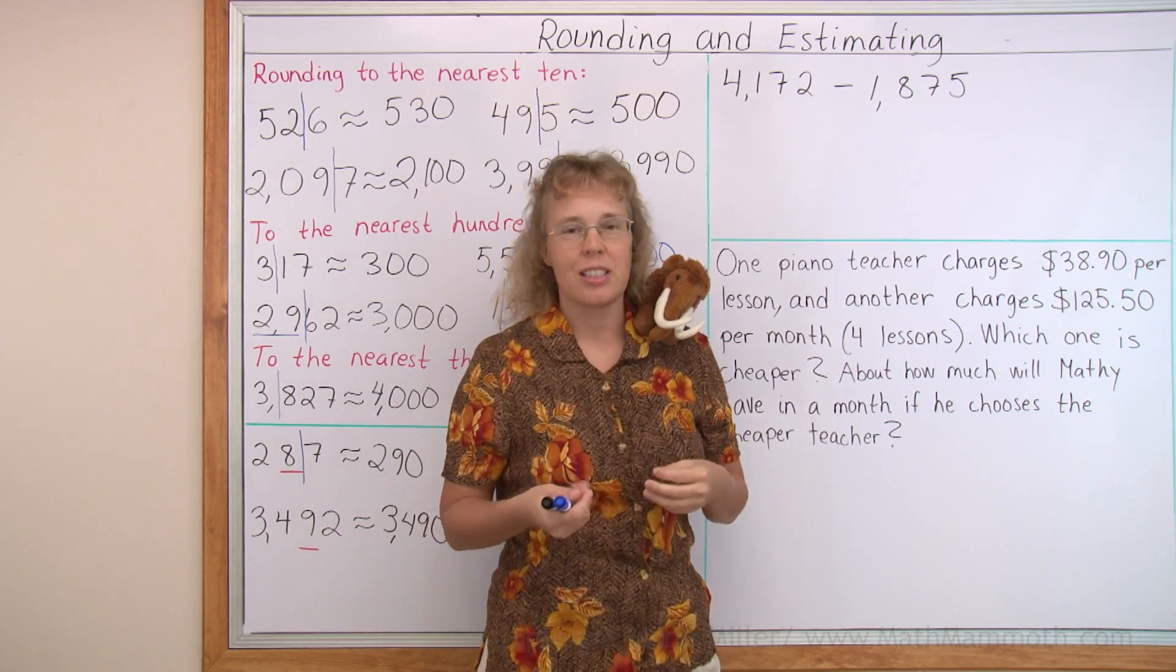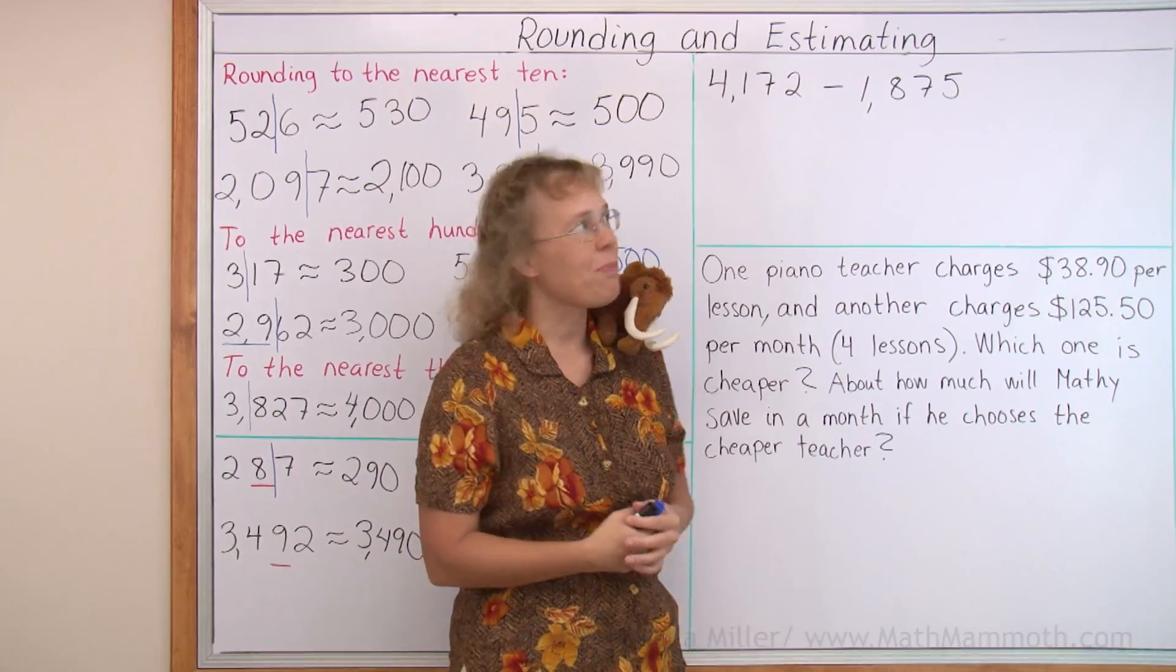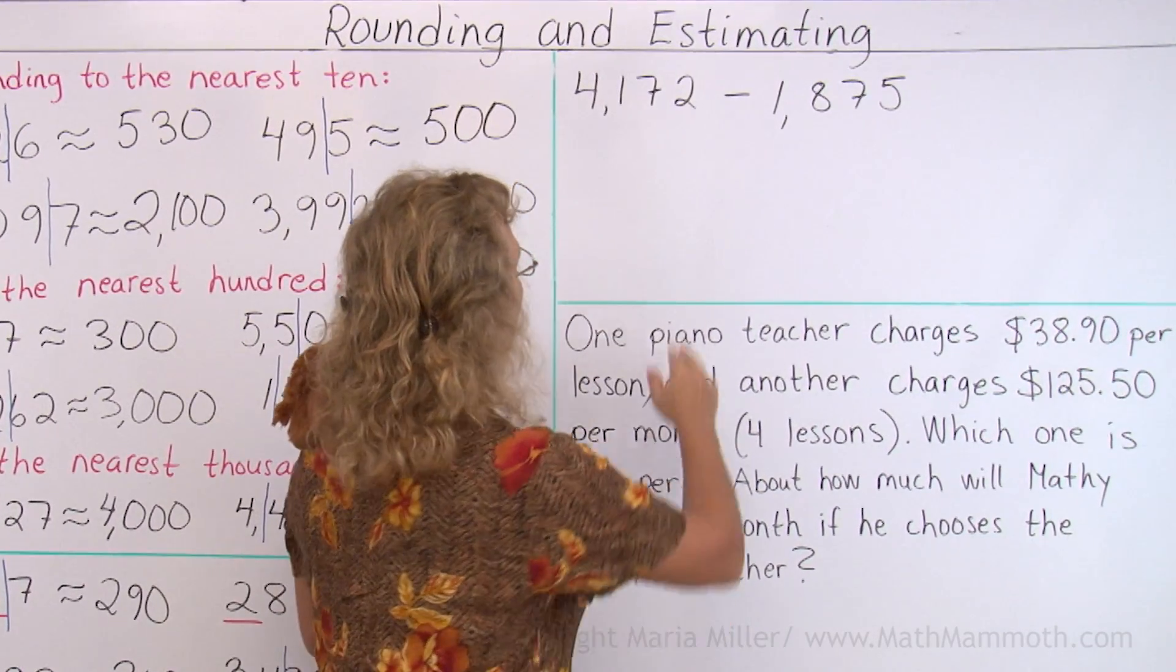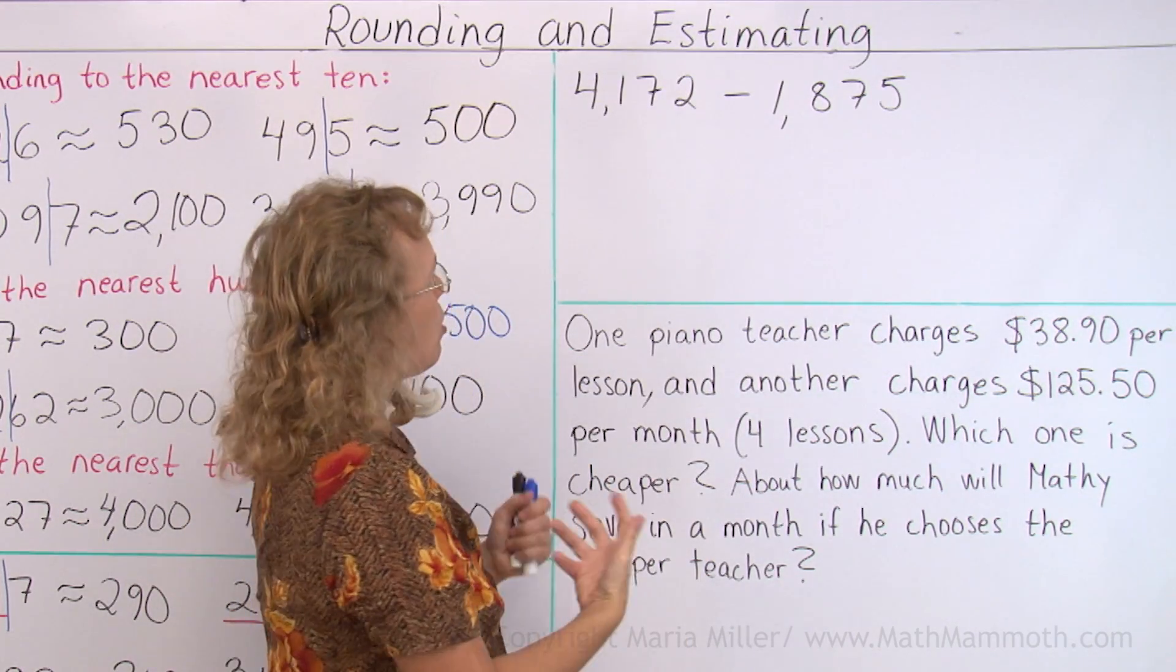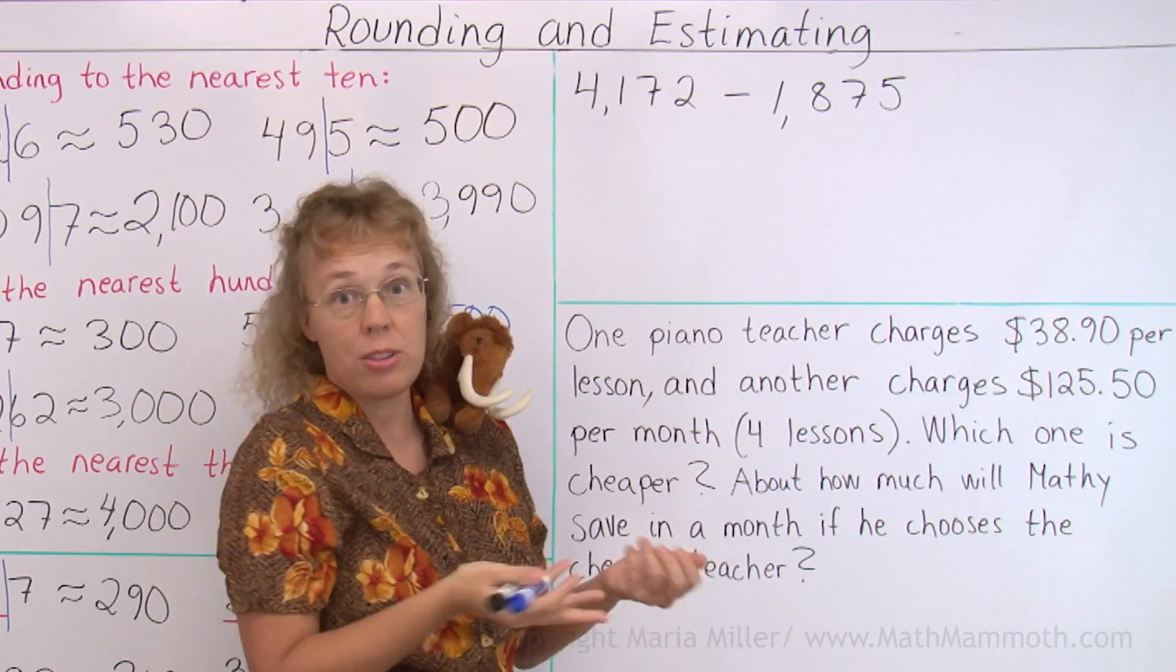Estimation means that we use rounded numbers to calculate with. So I'm gonna round both of these numbers. It doesn't say how to round, so I could choose. I could round them to the nearest thousand, for example.